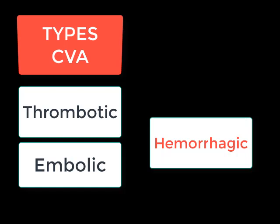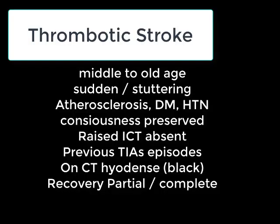Next we had seen the differences among these three types of stroke. Ischemic stroke — that is, thrombotic and embolic — is more common than hemorrhagic stroke. Thrombotic stroke occurs in middle to old age, is sudden in onset, stuttering in nature meaning the neuro deficit progresses gradually, with the commonest cause being atherosclerosis. Consciousness is preserved if the thrombotic stroke is small, raised intracranial tension signs are absent, and previous transient ischemic episodes are usually present. On CT it appears hypodense, and recovery may be partial or full if the stroke is small.